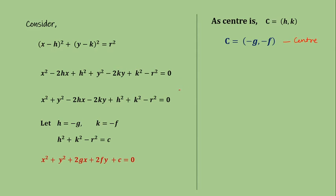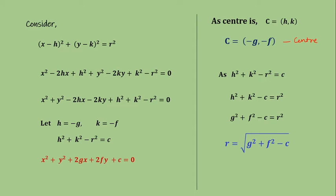To find the radius, we use the substitution h square plus k square minus r square is equal to c. Modifying this equation, h square plus k square minus c equals r square. Since h and k are replaced by minus g and minus f, this becomes g square plus f square minus c is equal to r square. So the radius can be written as root of g square plus f square minus c. This is the formula for the radius of the circle.